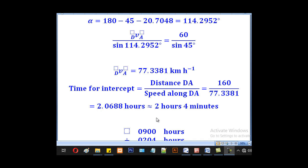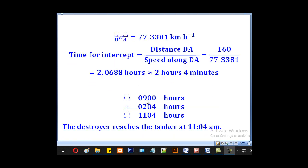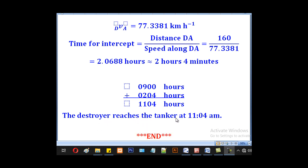We shall get 2.0688 hours which approximates to 2 hours and 4 minutes. Remember, it started at 9:00, so we shall add that. In 24 hour clock, it will be 9 plus 2.04, giving us 11:04. So the time the destroyer reaches the tanker will be 11:04 AM.